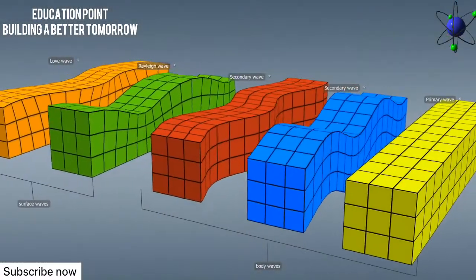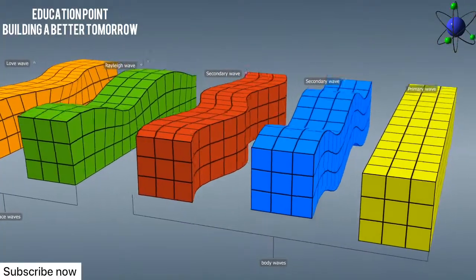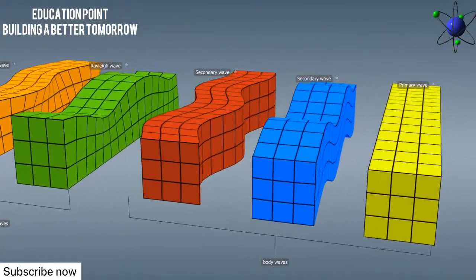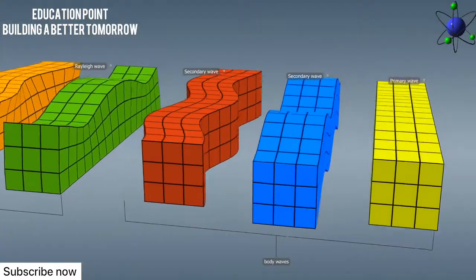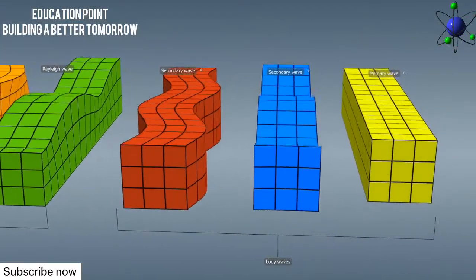The energy released in the focus or hypocenter spreads in the form of waves. These waves travel through the interior of the Earth and spread out in all directions. They are called body waves.